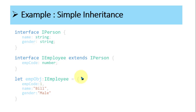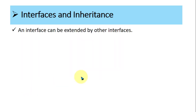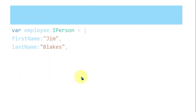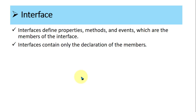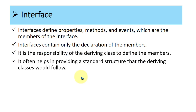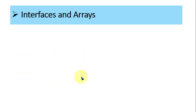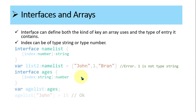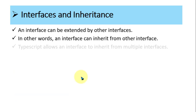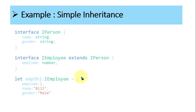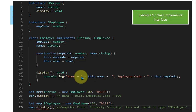So up until now, what we have seen: what is an interface — the set of rules — then interface and objects, then another example of interface and objects, then arrays and interfaces, and then interfaces and inheritance — simple inheritance from interface to interface, and then class to interface using 'implements'. If you have any doubt you can make a comment in the comment box.